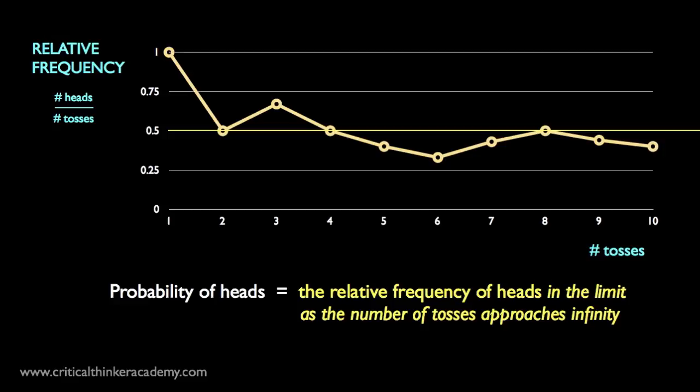For a case like this one, the frequency interpretation will define the probability of landing heads as the relative frequency of heads that you would observe in the long run as you kept tossing the coin. To be even more explicit, this long run frequency is defined as the limit that the sequence of relative frequencies approaches as the number of tosses goes to infinity. In this case, it's intuitive that the sequence will converge on 1 half in the limit. And if that's the case, then according to this approach, we're justified in saying that the probability of landing heads is exactly 1 half.